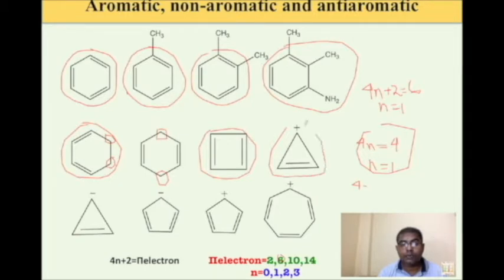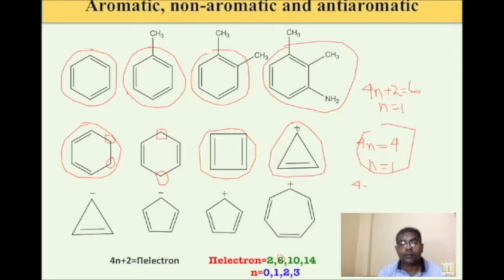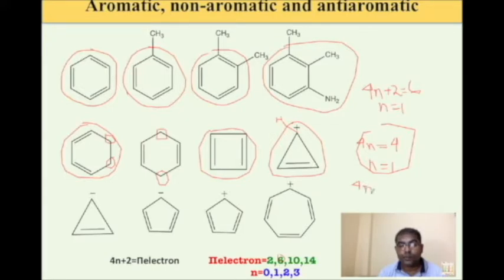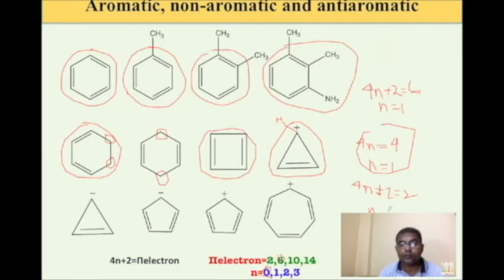Let us see this molecule — this cyclic carbocation. Aromatic compounds may be 3-membered, 4-membered, 5-membered rings; most commonly they are 6-membered, 7-membered, or 8-membered rings. This particular molecule has 2 pi electrons. Since this carbon atom is bonded to 3 other atoms including hydrogen, it is sp2 hybridized as per VSEPR theory. For this molecule, 4n+2=2, so n=0. It follows Hückel's rule with n=0, so it is an aromatic compound.